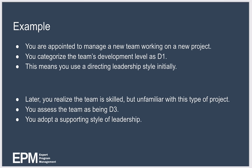As an example, suppose you've just been appointed as manager of a new team to work on a brand new project. It makes sense to categorize the team's development level as D1, because you are new to the team and the team is new to the project. So you adopt a directing style initially, telling the team exactly what you want them to do. Over time you realize the team is very skilled but unfamiliar with this particular type of project — you assess their development level as D3, capable but cautious. You then switch to a supporting style, working closely with the team almost as an integral member, encouraging ideas and supporting team members to build their confidence.